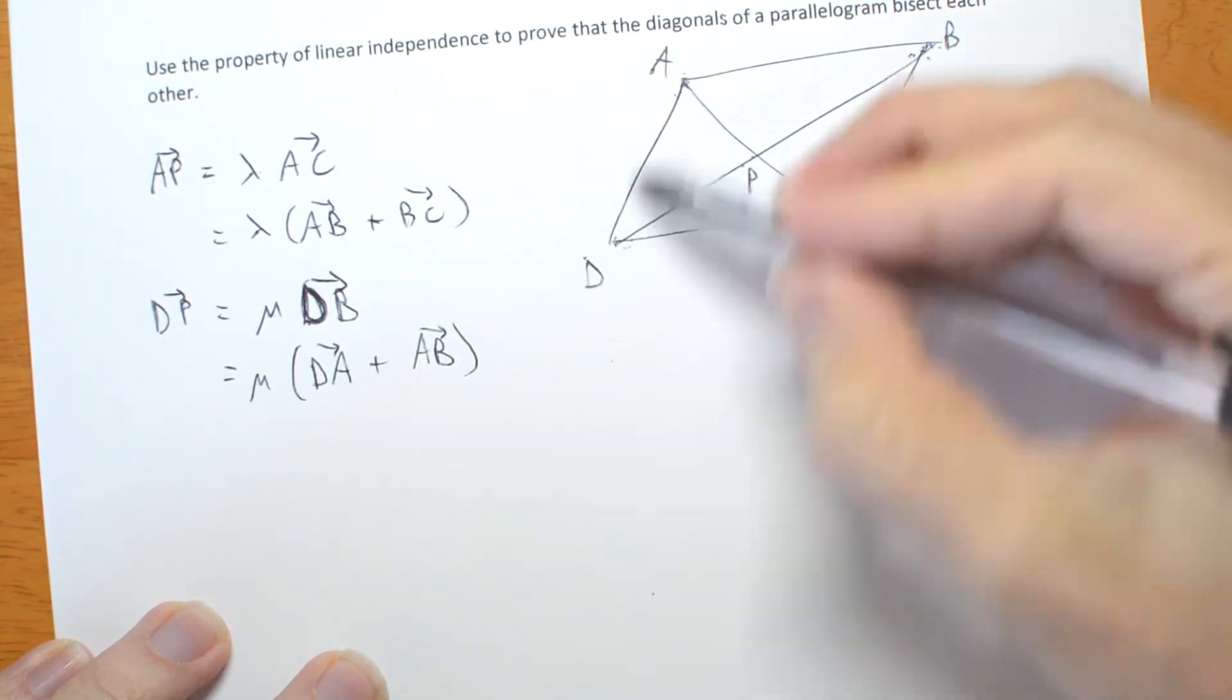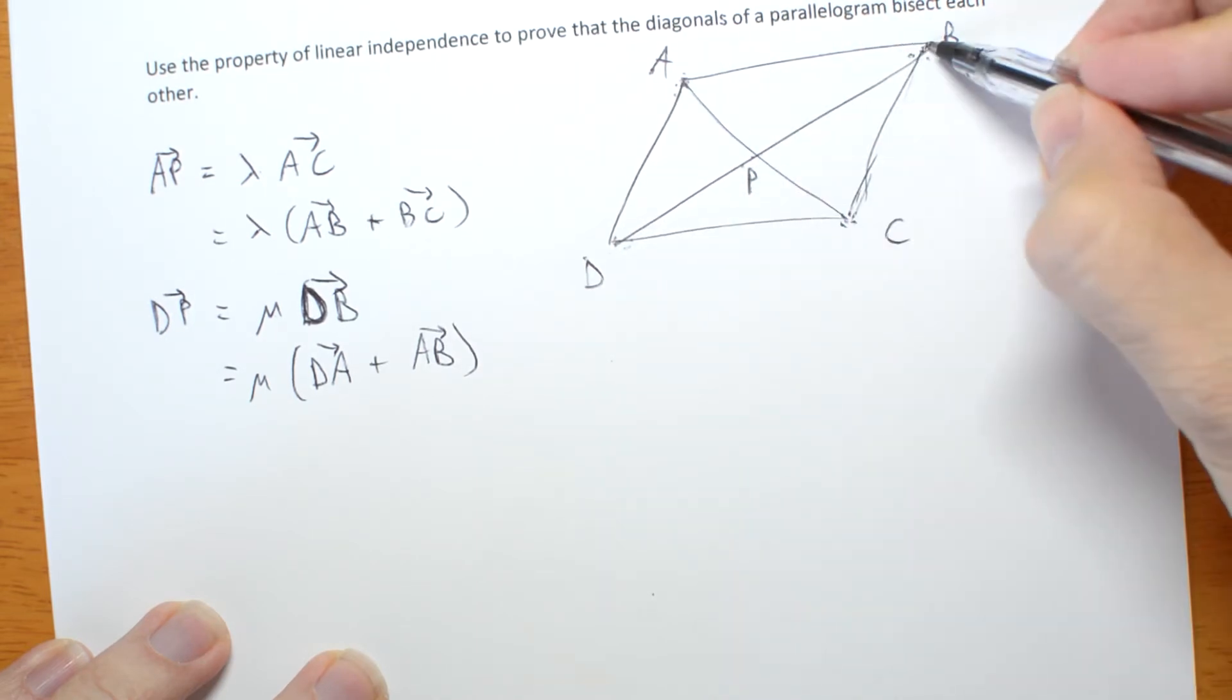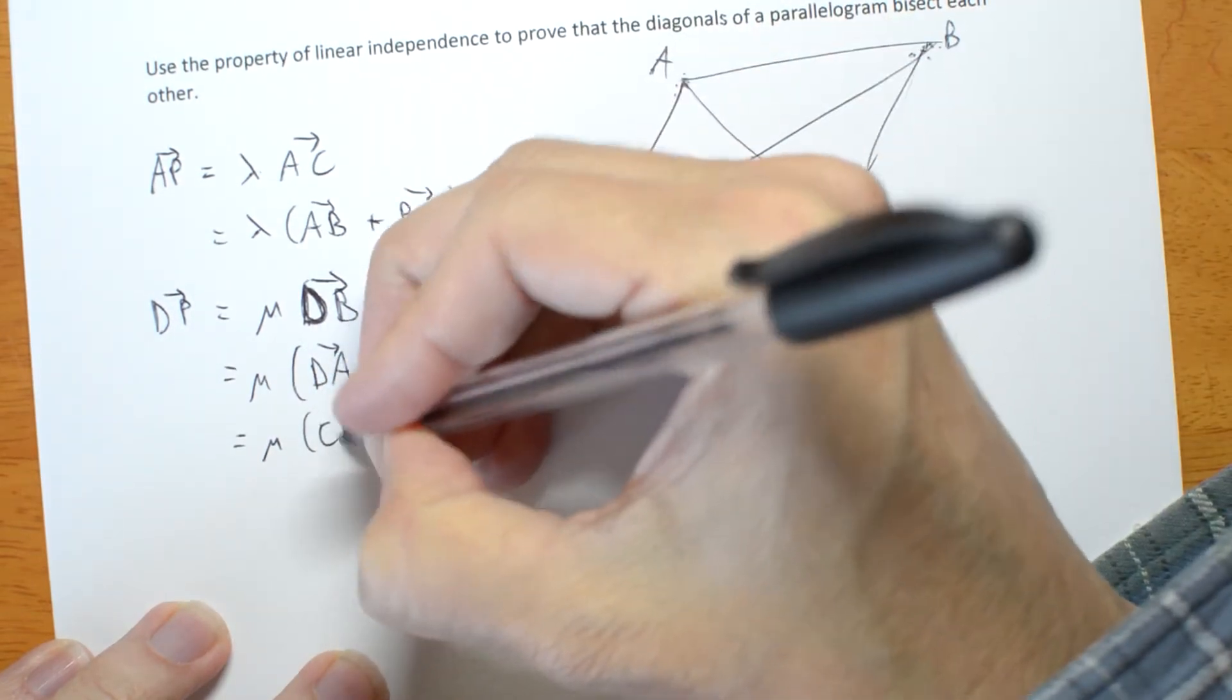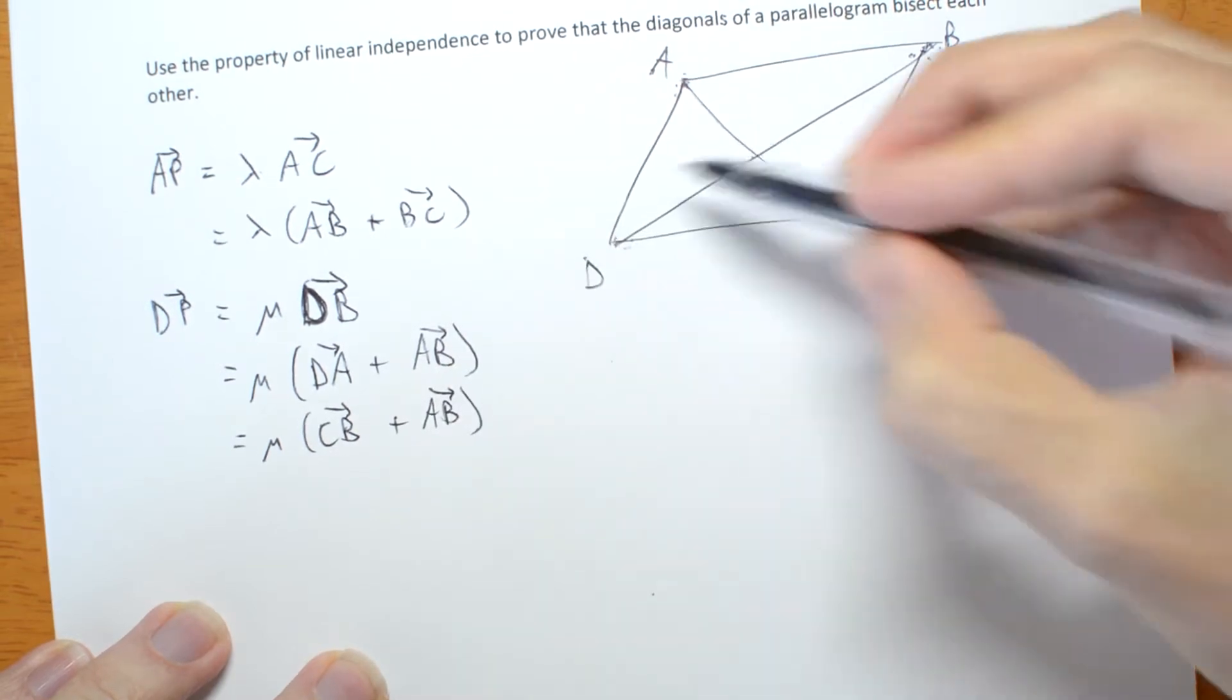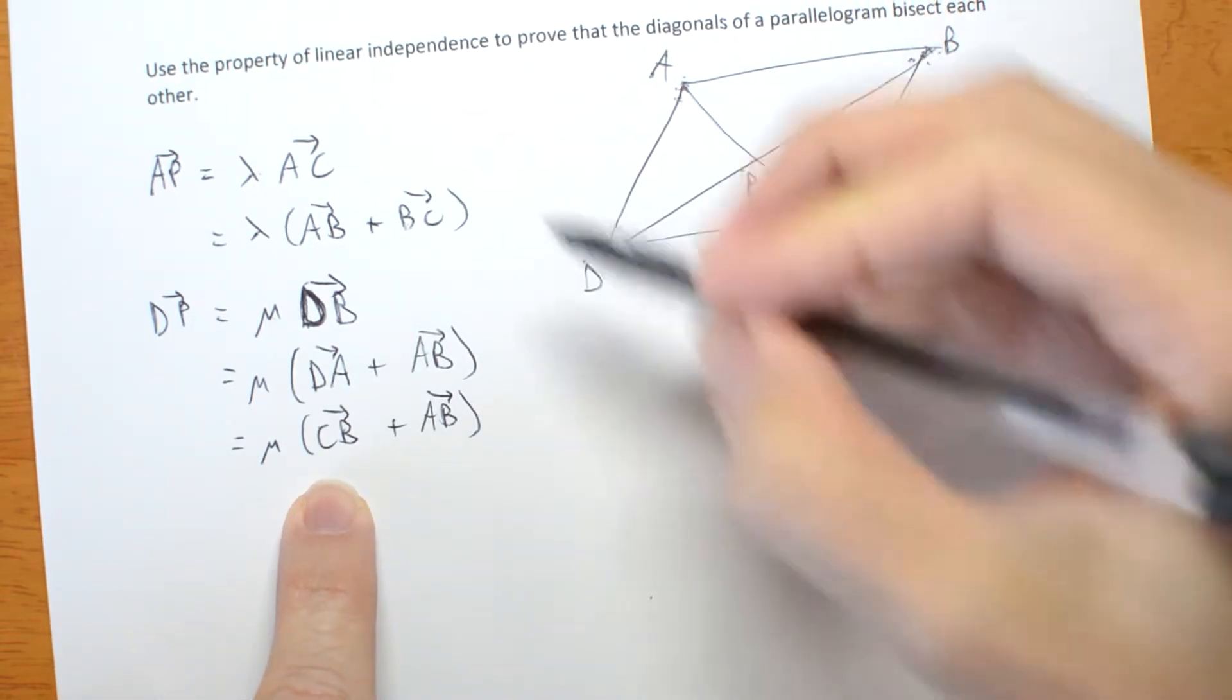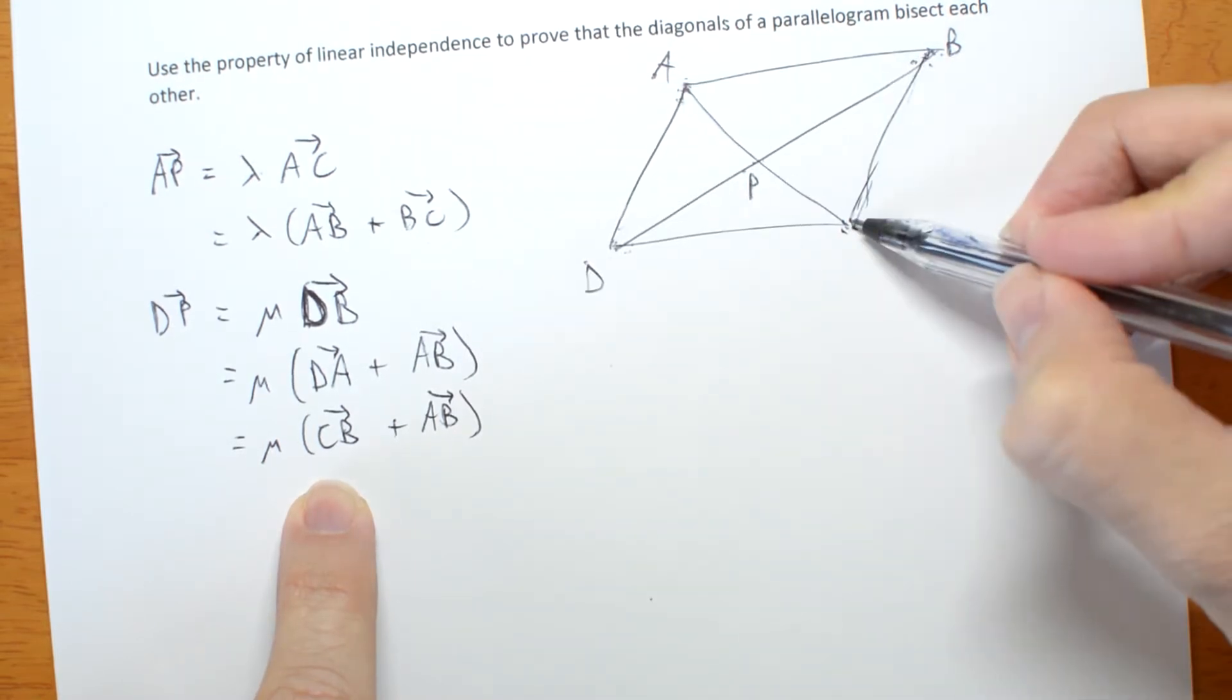But if this is a parallelogram, DA is the same as CB. DA is the same as CB. But my previous one had BC, which is the negative of CB.